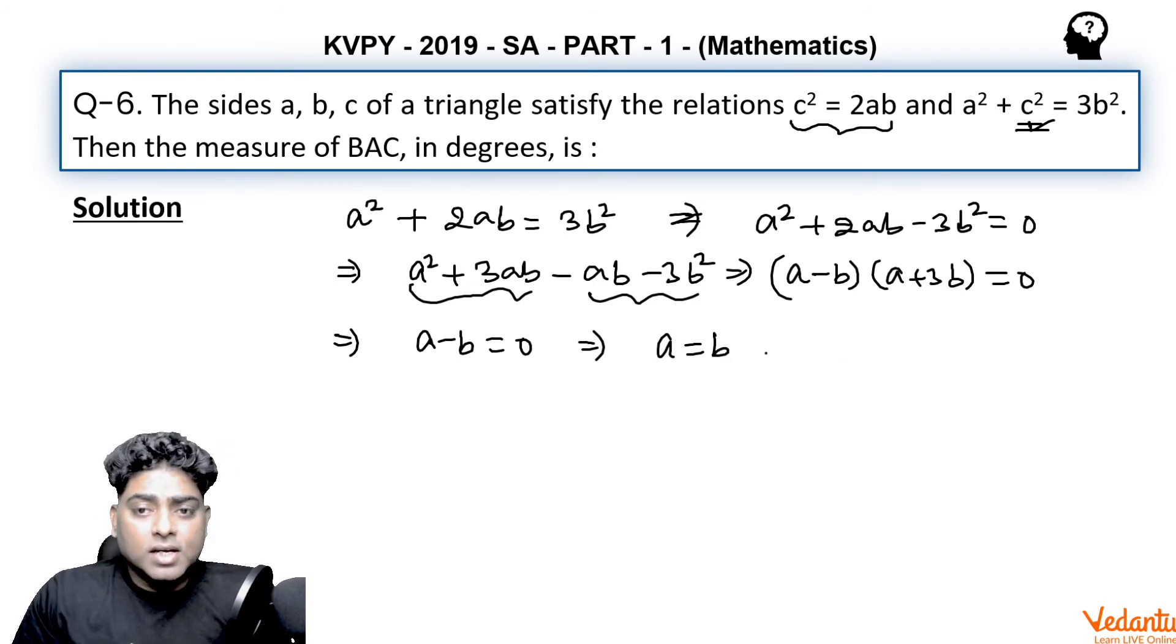The triangle is isosceles. Again, c² is 2ab, so 2ab and b is a, so I can write it as 2a². And 2a² can again be written as, because b is same as a, so it is a² plus b².